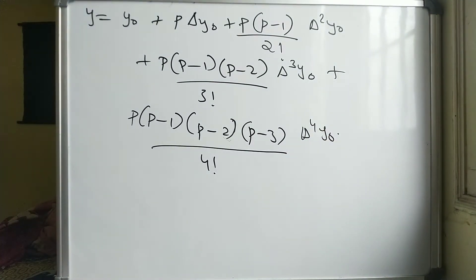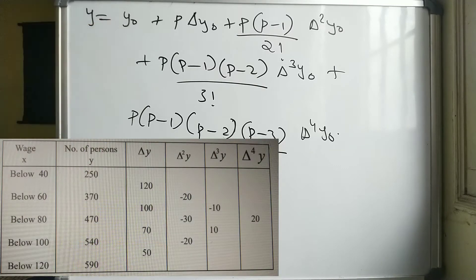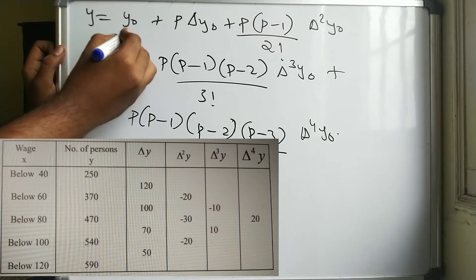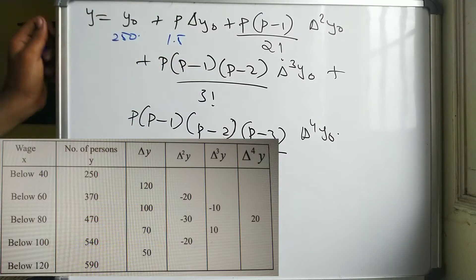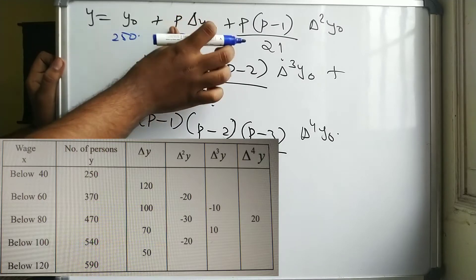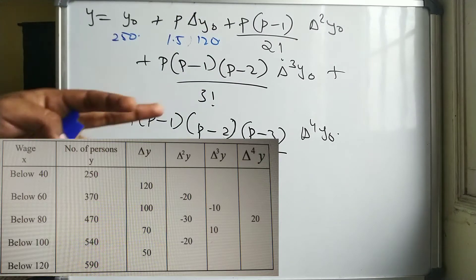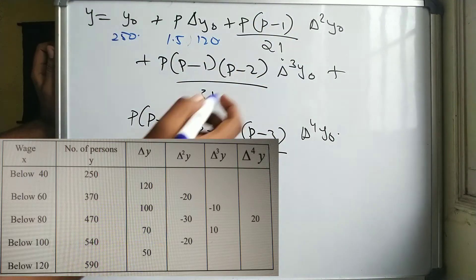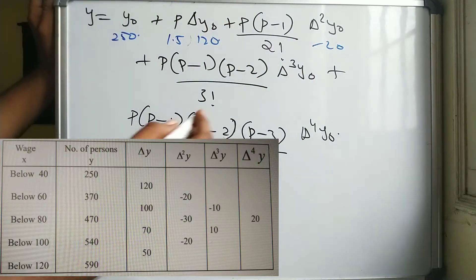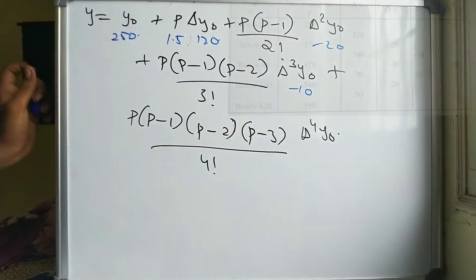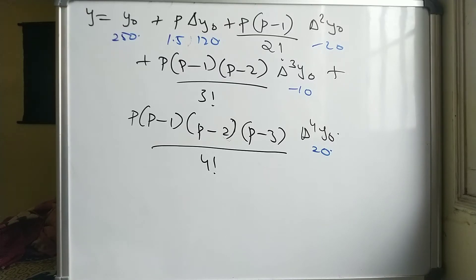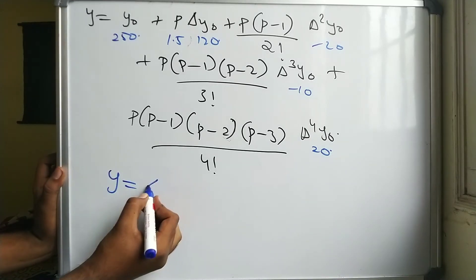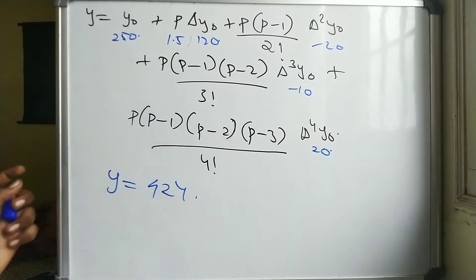Substituting all values: y₀ = 250, p = 1.5, Δy₀ = 120, Δ²y₀ = -20, Δ³y₀ = -10, Δ⁴y₀ = 20. After substituting and computing, the answer is approximately y = 424. This gives us below 70 = 424.